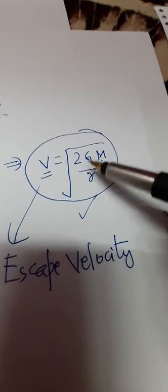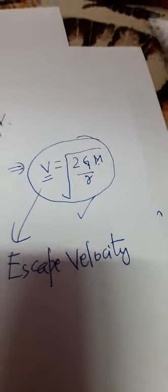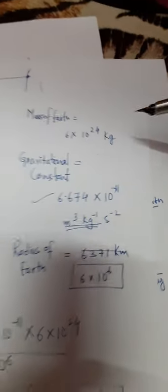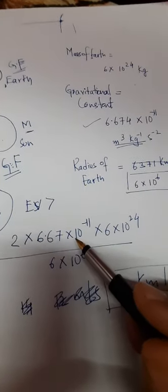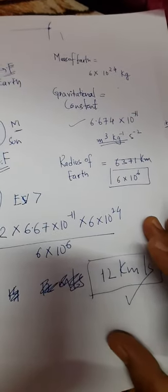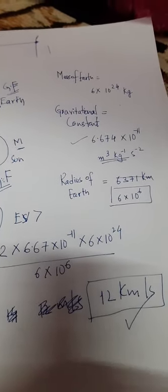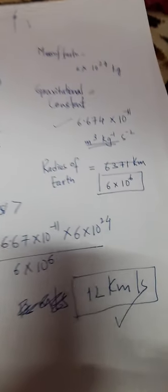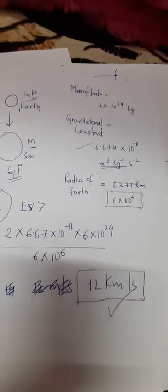You can easily calculate the escape velocity of earth, which is approximately 12 kilometers per second. That means if you want to escape the earth or cross the gravitational pull of the earth's surface, you need 12 kilometers per second velocity to reach space.